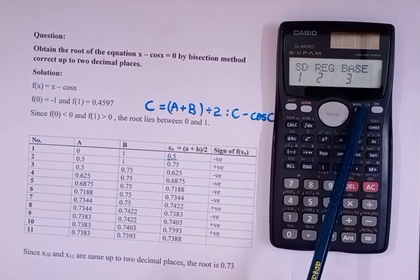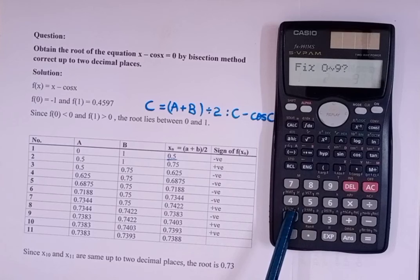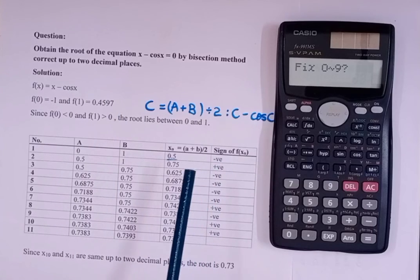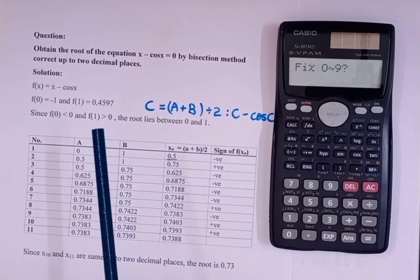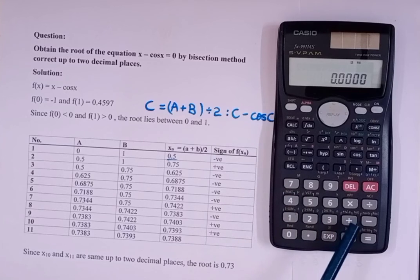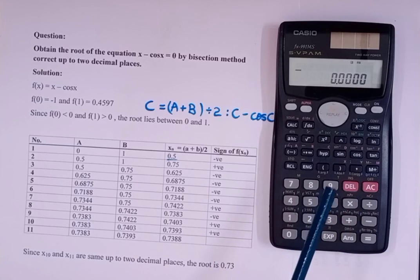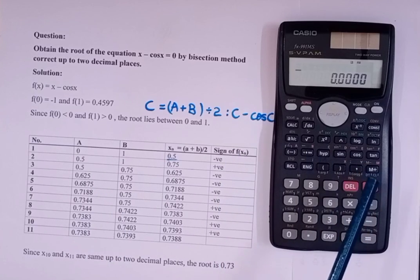One more thing: press Mode, then Mode Mode Mode Mode, and you'll see Fix — press 1. You can set the number of decimal places. Since the question asks for two decimal places, you can keep it as 2 or 3. If asked for four decimal places, keep it as 4. I had kept it higher just to show you all the values.